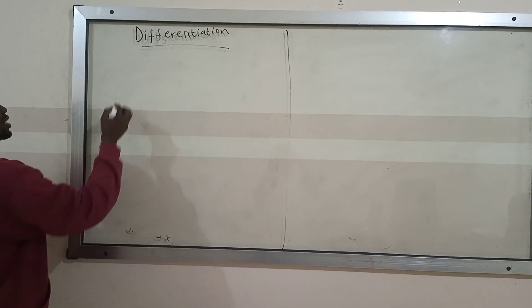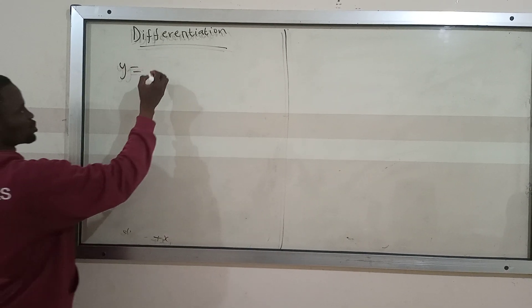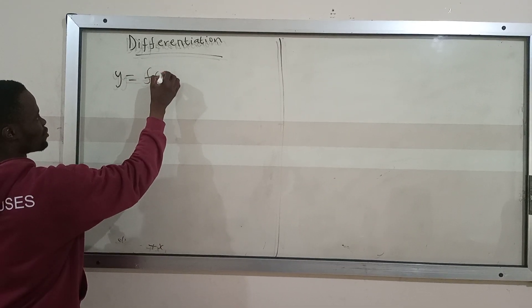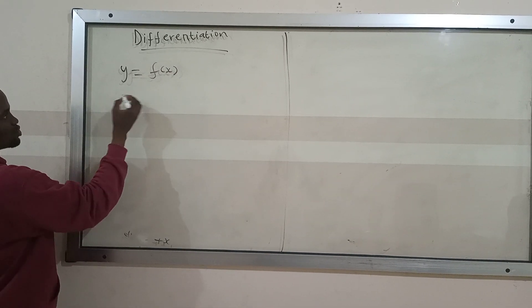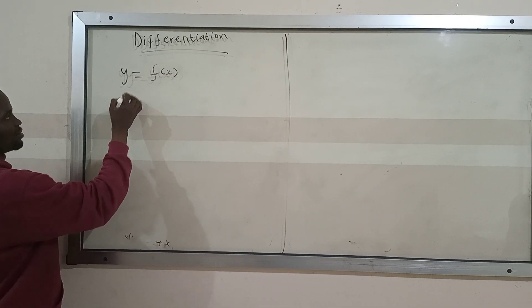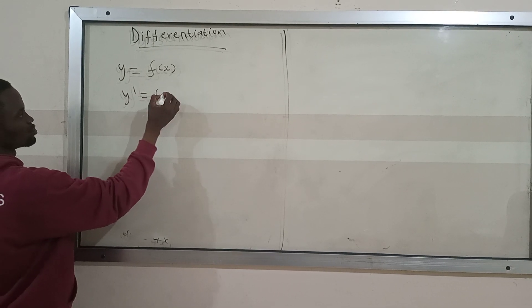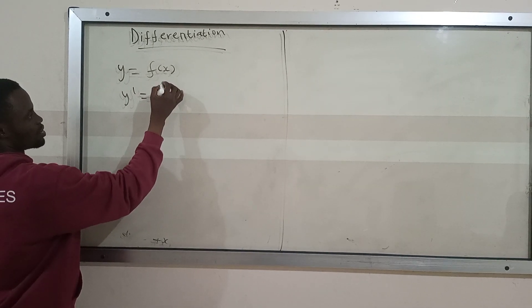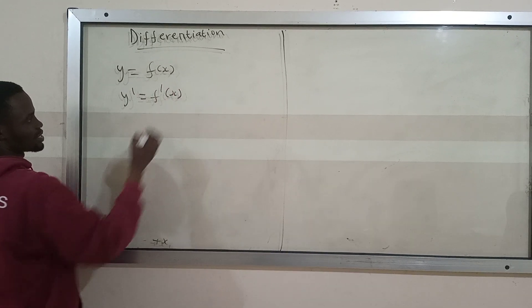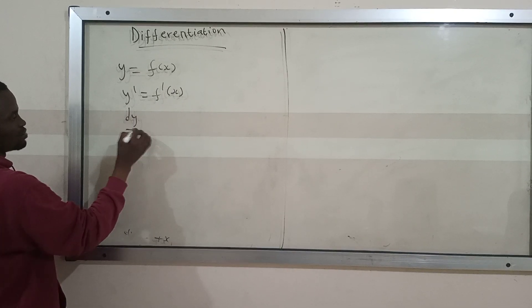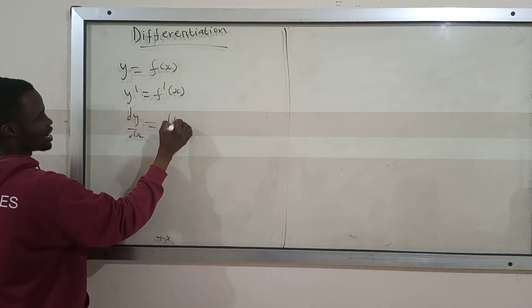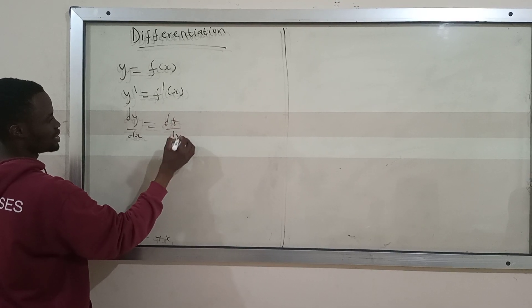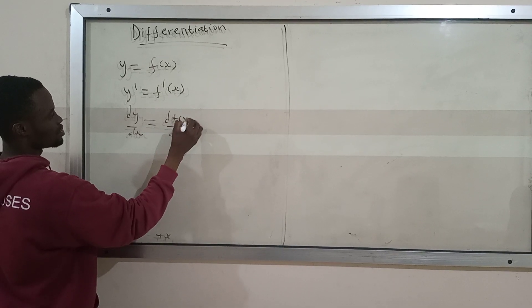To start with, we begin with the basic ones. If you have y equals f of x, the function, and you want to differentiate both sides, you are going to get y prime, which is equal to f prime of x, which is the same as dy/dx equals df/dx.